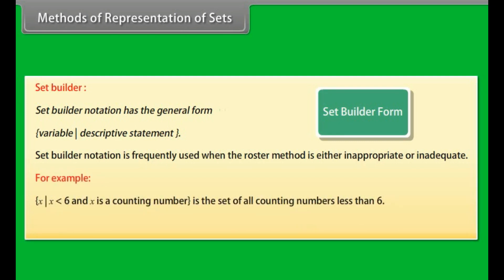Set builder notation is frequently used when the roster method is either inappropriate or inadequate. For example, X such that X less than 6 and X is a counting number is the set of all counting numbers less than 6. Note this is the same set as {1, 2, 3, 4, 5}.